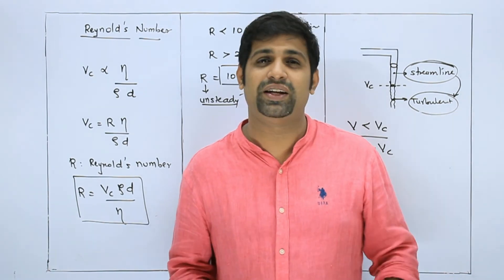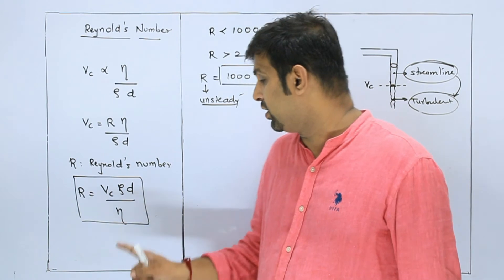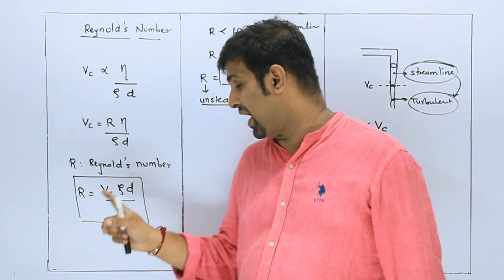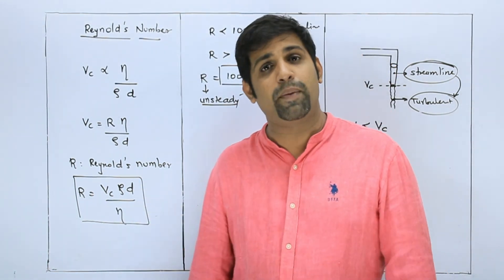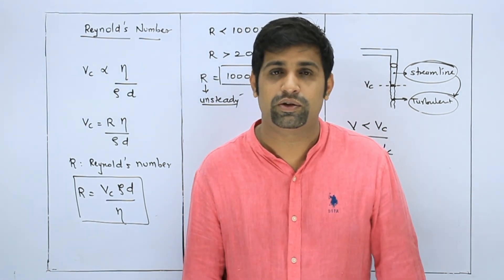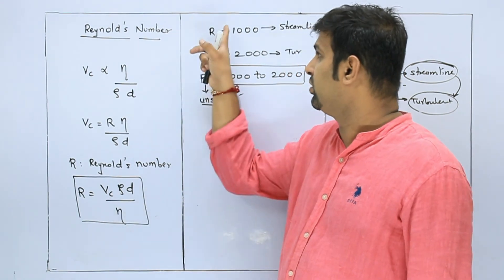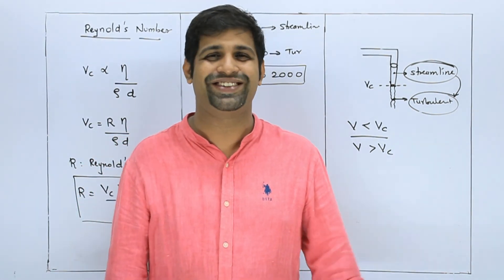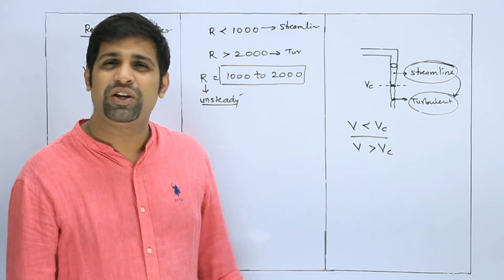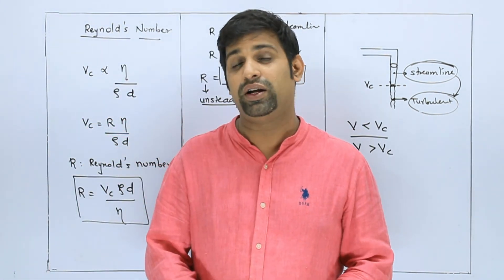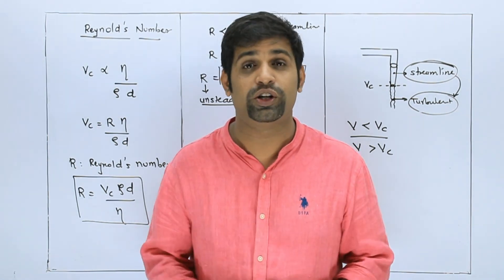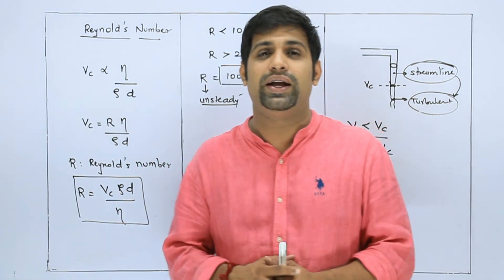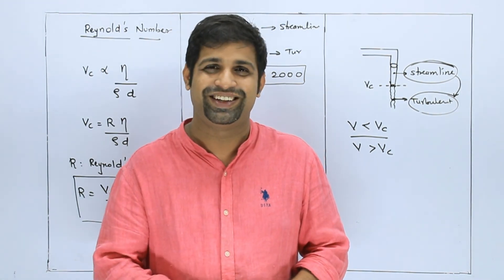So this depends on the fluid and the liquid. You also need to know the diameter of the tube. And from these values you can determine how the flow is at that point — whether it is streamlined, turbulent, or unsteady. Reynolds number is used to identify which type of flow it is, and it is a pure number — it has no unit or dimension. I hope you understood. We have covered entire hydrodynamics which is there in your syllabus. Thank you very much.